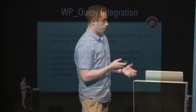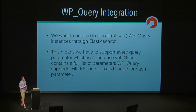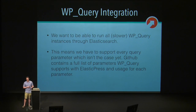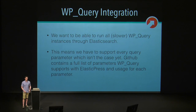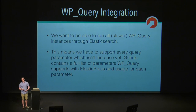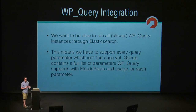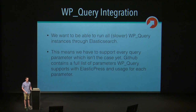The goal of the project is to be able to run all slower WP_Query instances and search instances through Elasticsearch. This means we have to support every single argument that WP_Query supports, which is quite the task. Some of the arguments don't make sense and some aren't even possible given the code that's in core. I'd encourage you to check GitHub for a full list of the WP_Query parameters we can actually support.